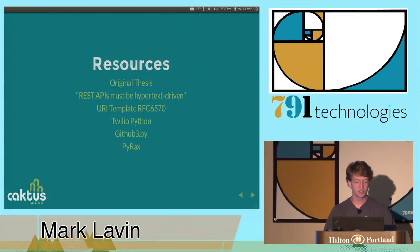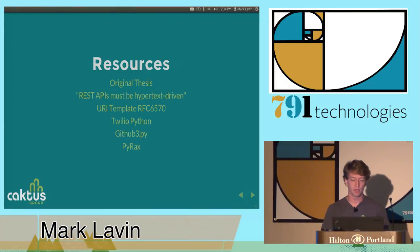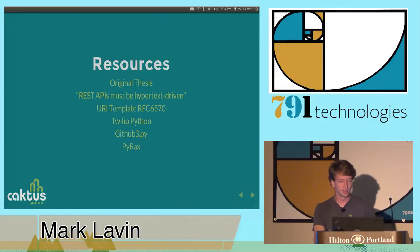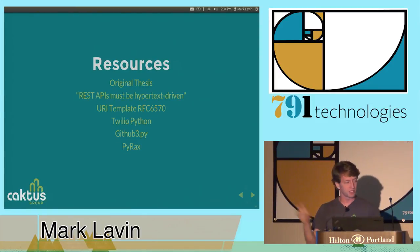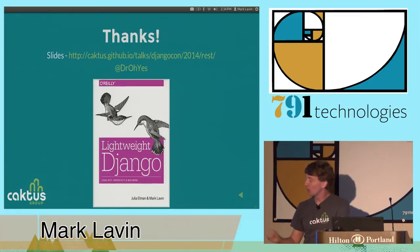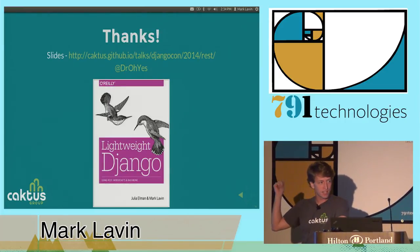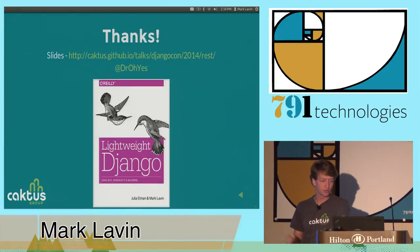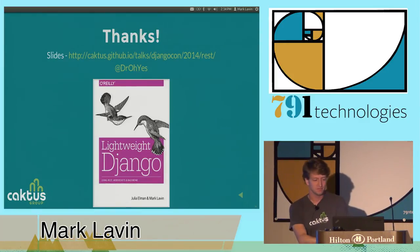Some handy resources: there are links to the original doctoral thesis and Roy Fielding's rant about REST APIs must be hypertext-driven, an RFC about constructing URI templates for more complex templates — something GitHub does and the Python library uses — and links to the example libraries. I didn't link to Slumber because you shouldn't use it. Thank you for listening. I'm Mark, writing Lightweight Django. I have a few pre-release copies — I'm going to be signing them at 12:30 at the Cactus table if you want to come by. Thanks for listening and build great APIs.